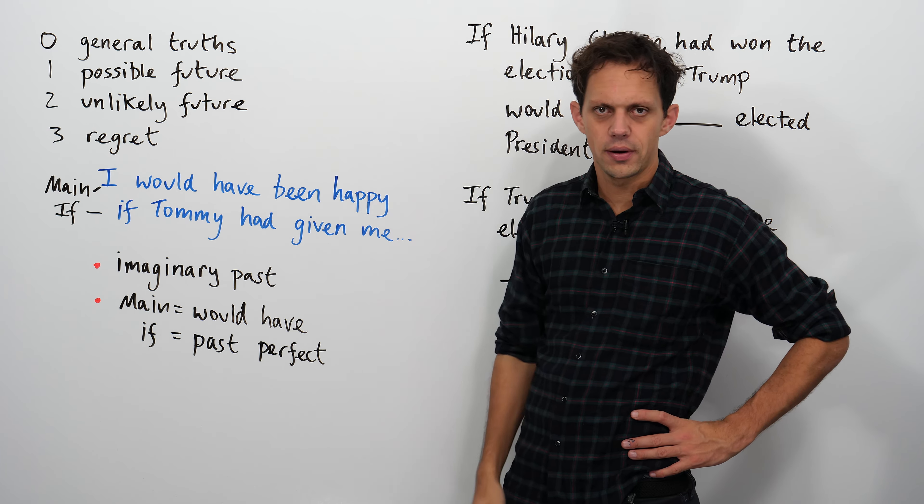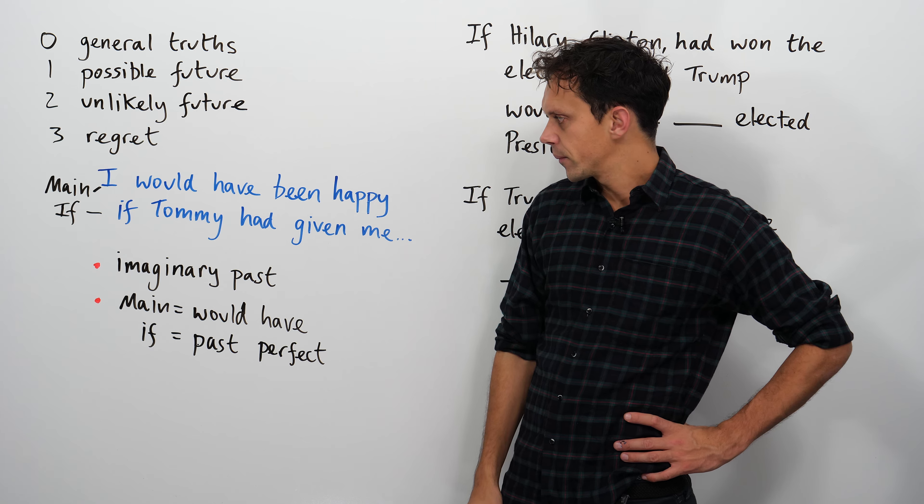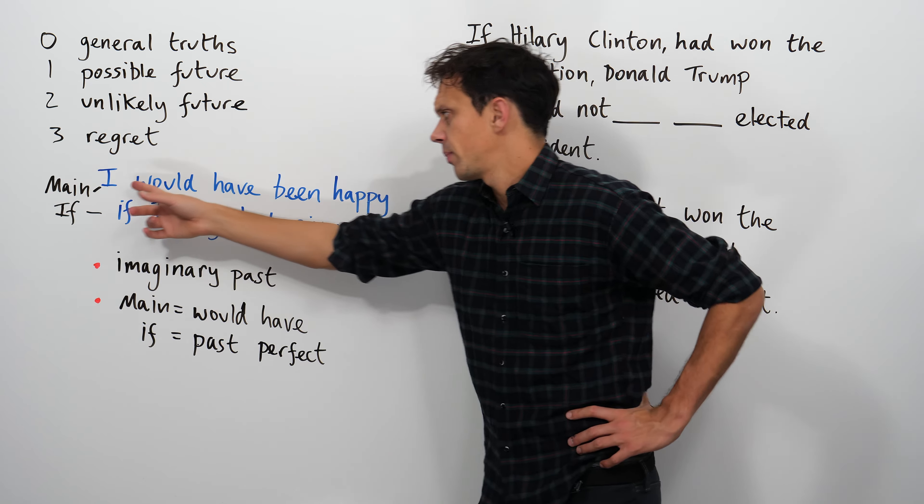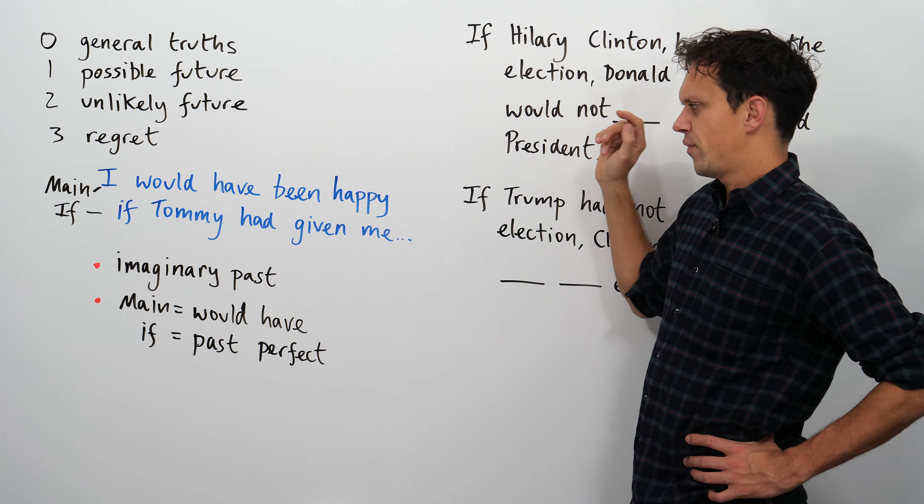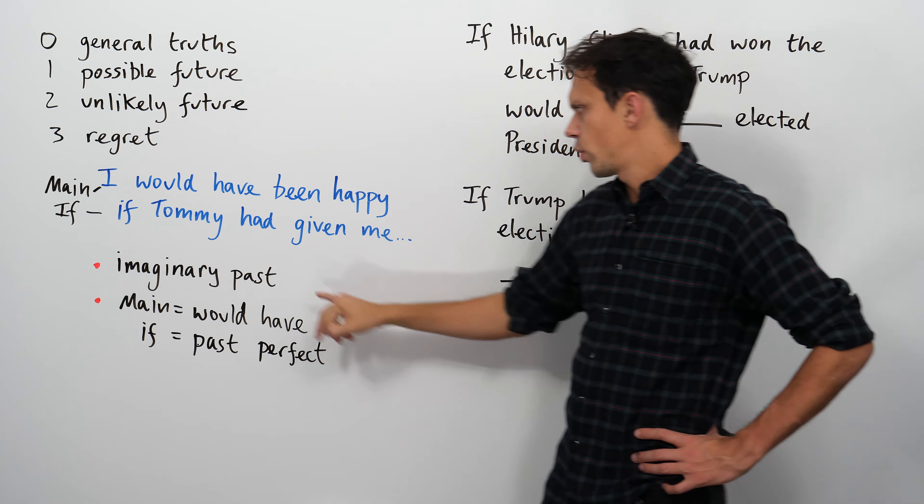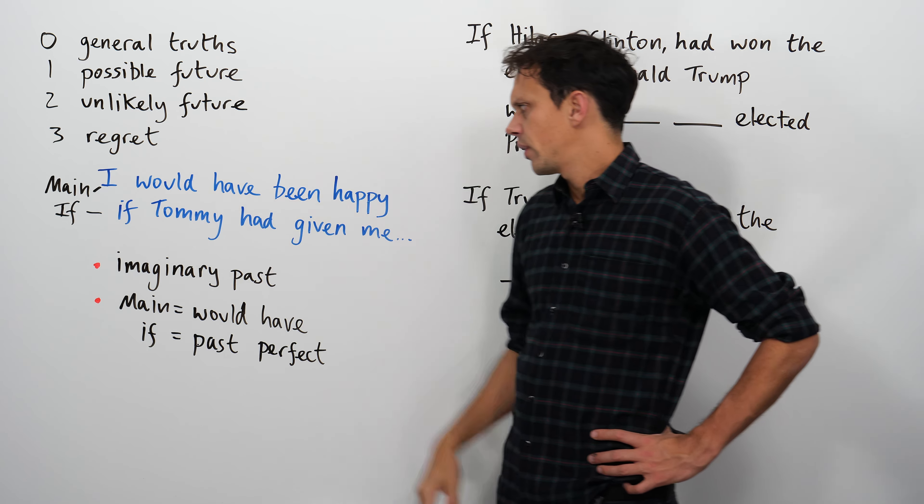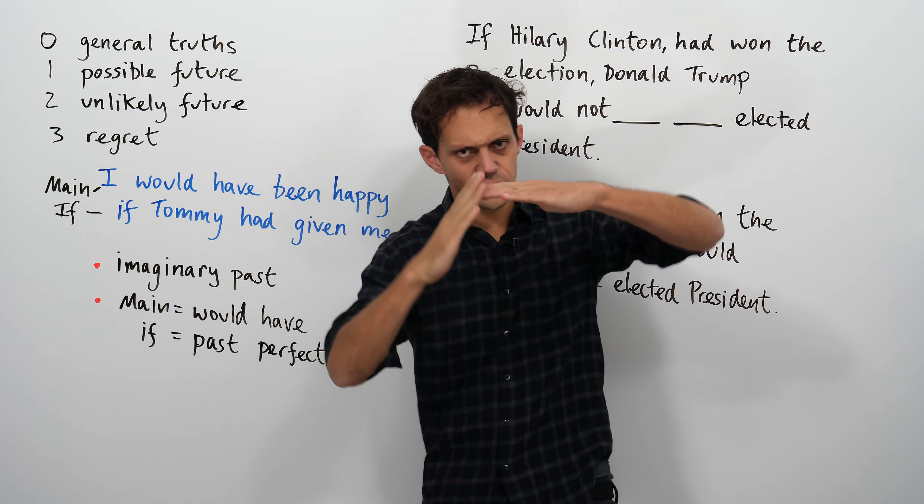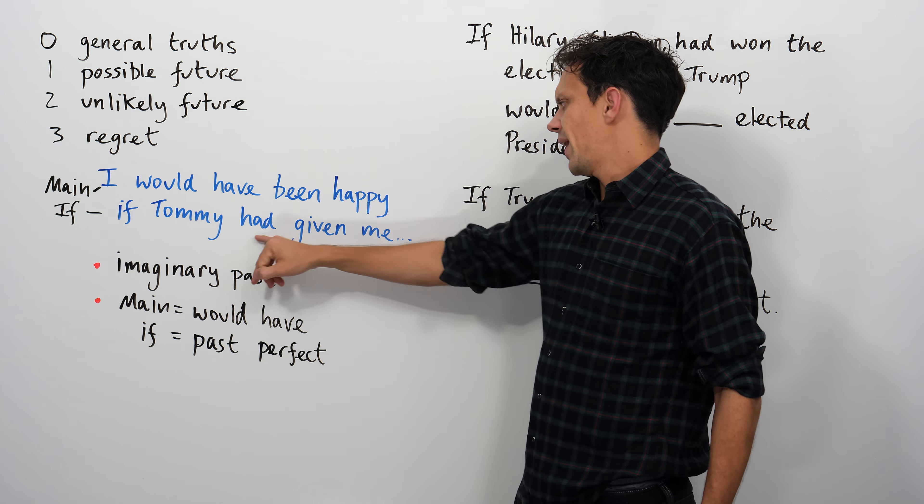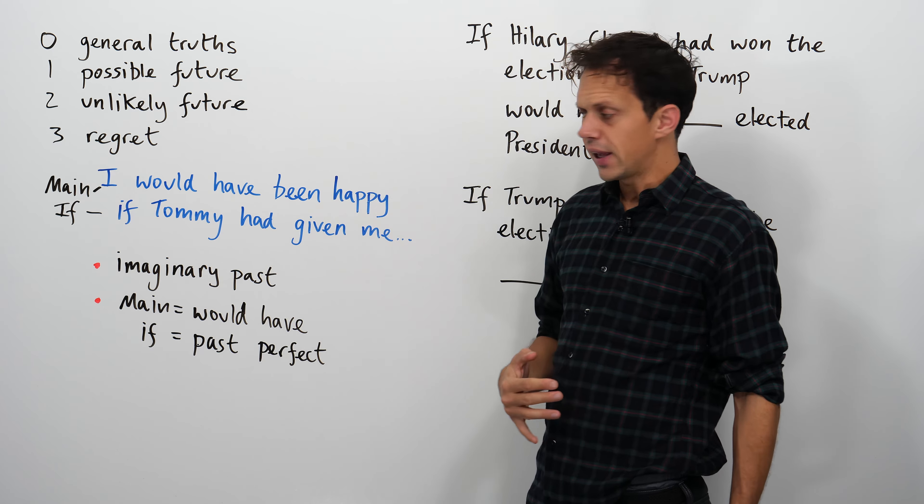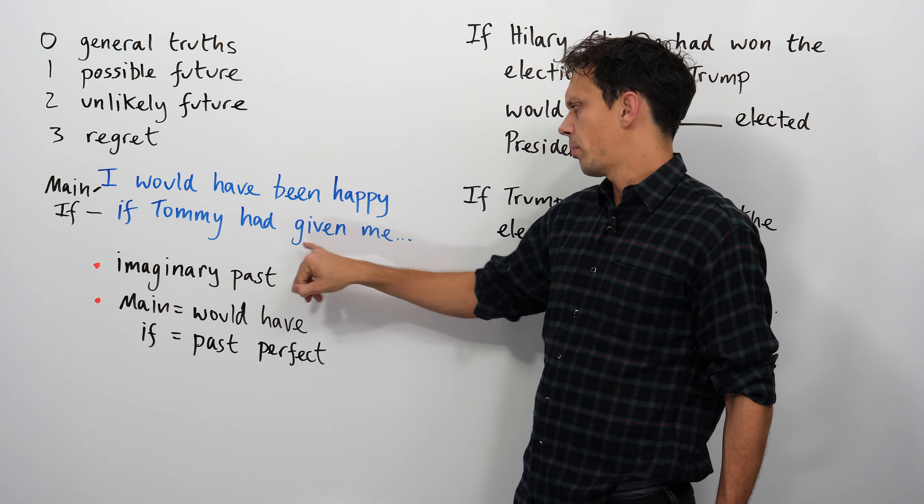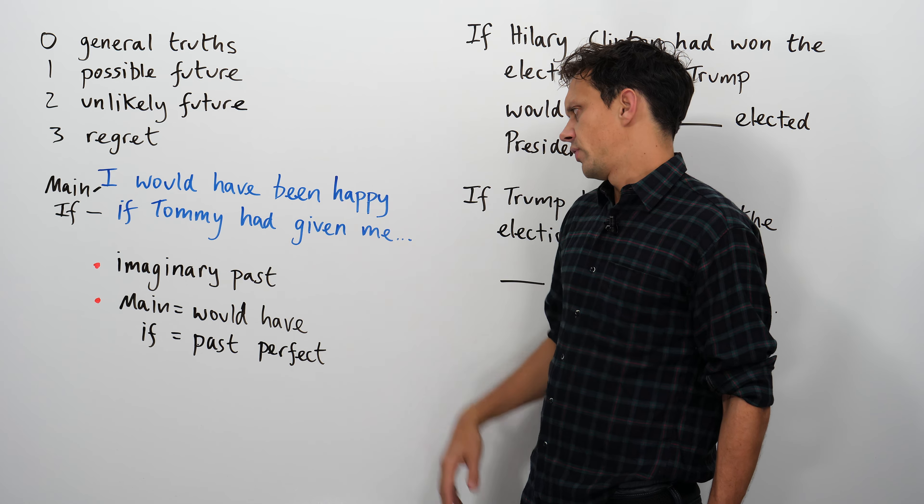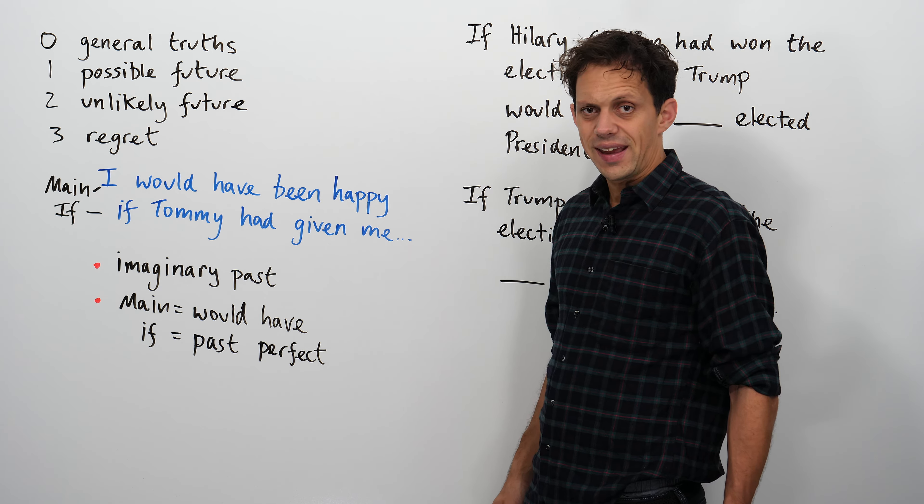Oh, why did that happen? There's a main clause and an if clause. The main clause will look something like this: I would have been happy. So we've got would have in the main clause. If that's like the seesaw point. If Tommy had given me some cake. So we have the past perfect tense here. Had plus past participle. Had given me some cake.